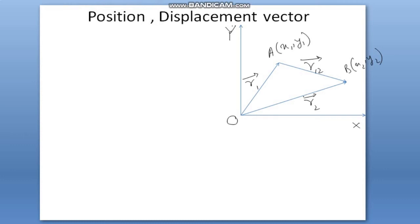Last lesson we discussed position and displacement vectors. Today we'll discuss position, displacement, velocity, and acceleration. Position vector indicates coordinates of a point. Suppose a point A has coordinates (x₁, y₁) and point B has coordinates (x₂, y₂).